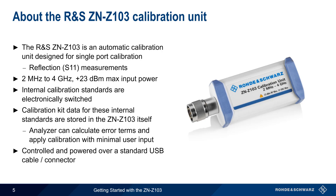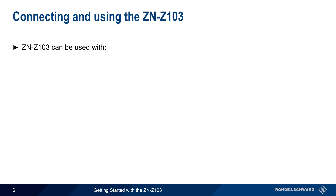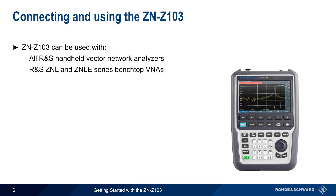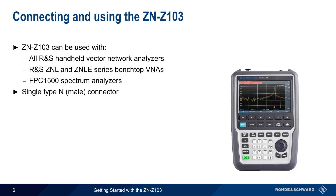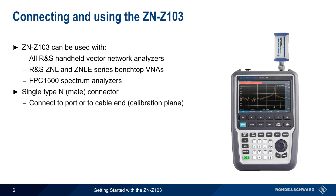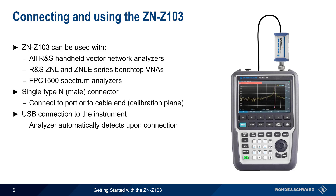The unit is controlled and powered over a standard USB cable. The ZN-Z103 can be used with all Rohde & Schwarz handheld VNAs, as well as with the ZNL and ZNLE series benchtop VNAs. It can also be used for calibrating VNA measurements made with FPC-1500 series spectrum analyzers, since these have an internal tracking generator and VNA bridge. The RF connection is a standard N-male connector that is connected either to the analyzer port itself, as shown here, or to the end of the cable or other device that represents the calibration plane. It's connected to the analyzer via USB, and the analyzer will automatically detect the ZN-Z103 upon connection.